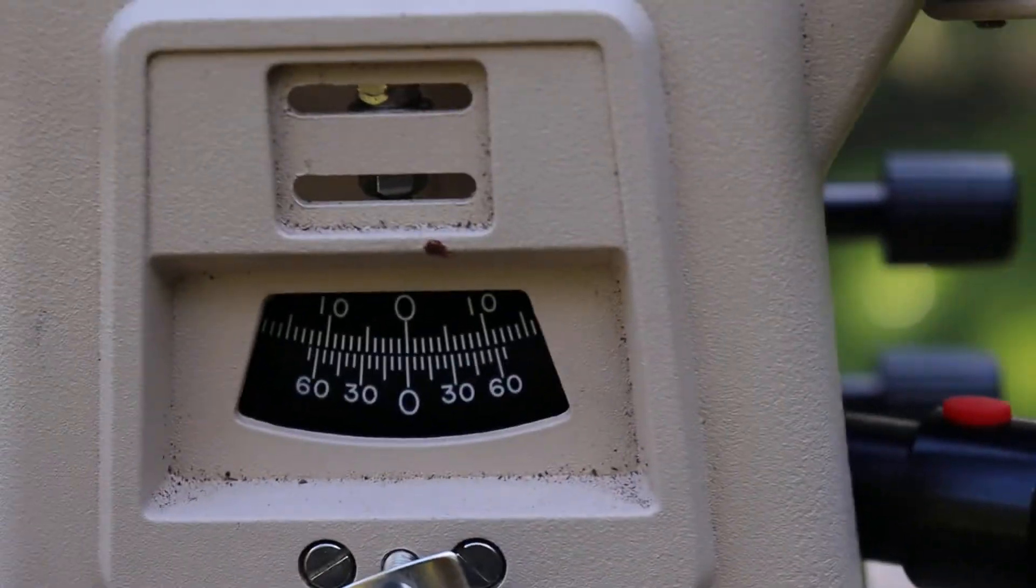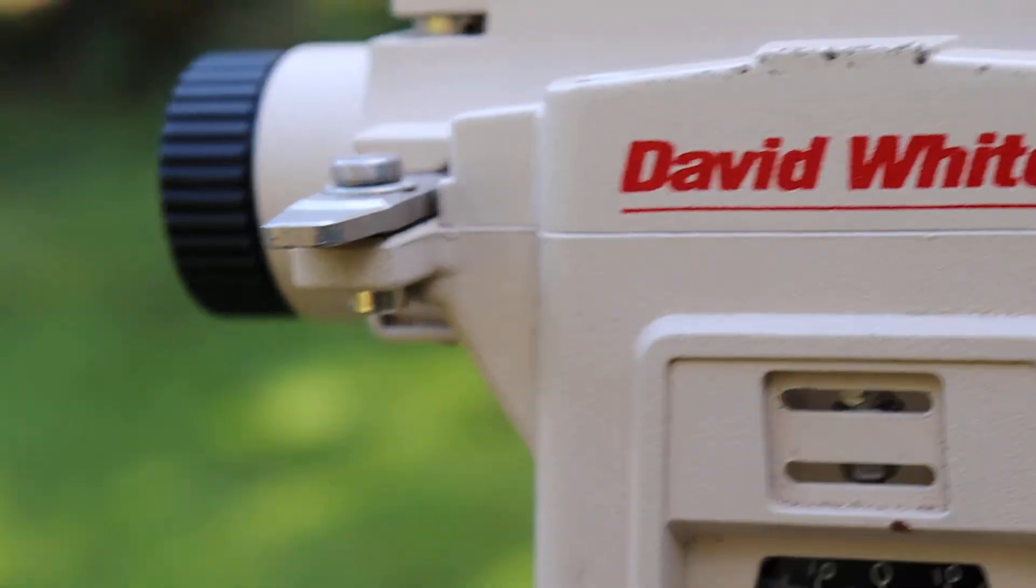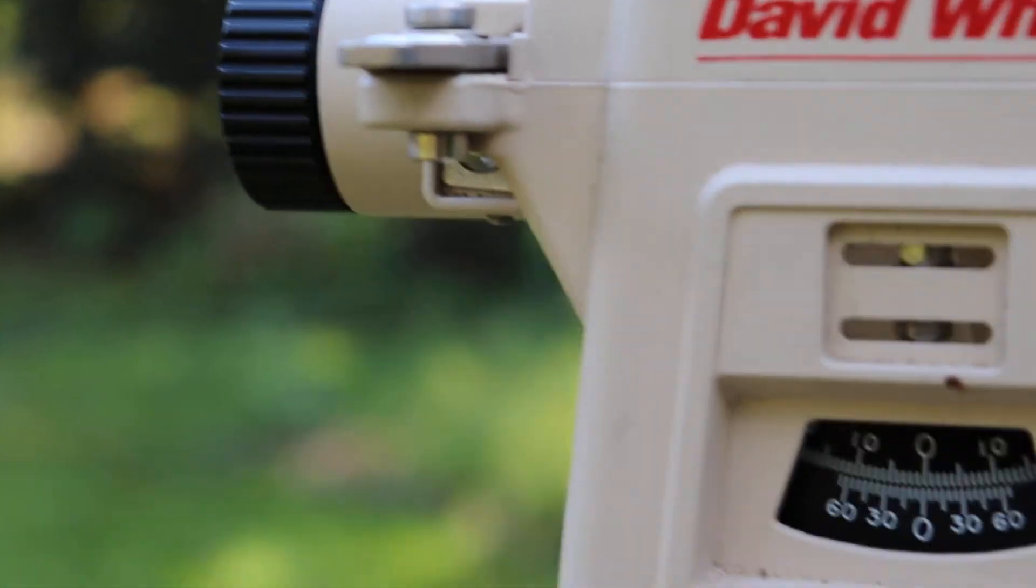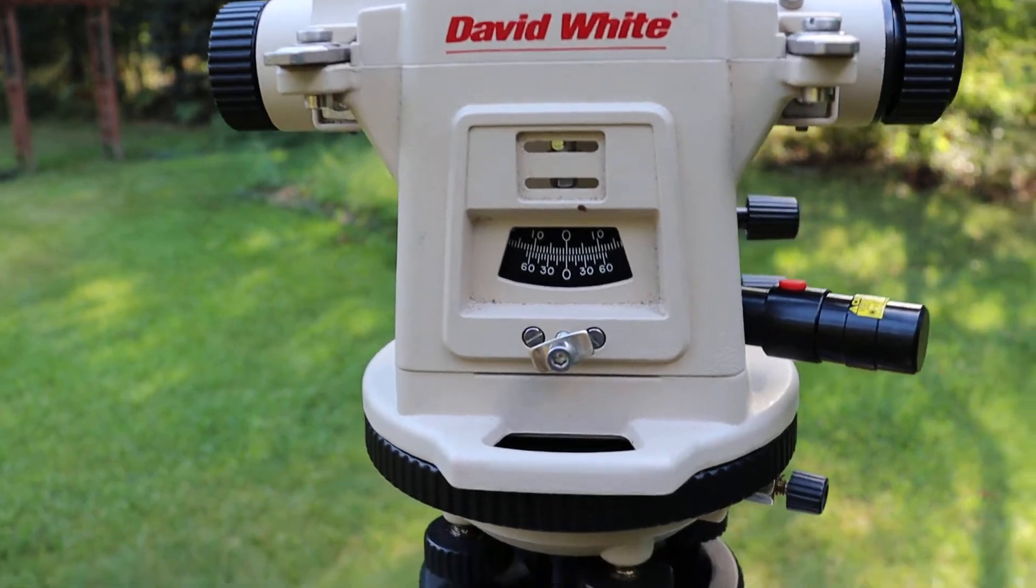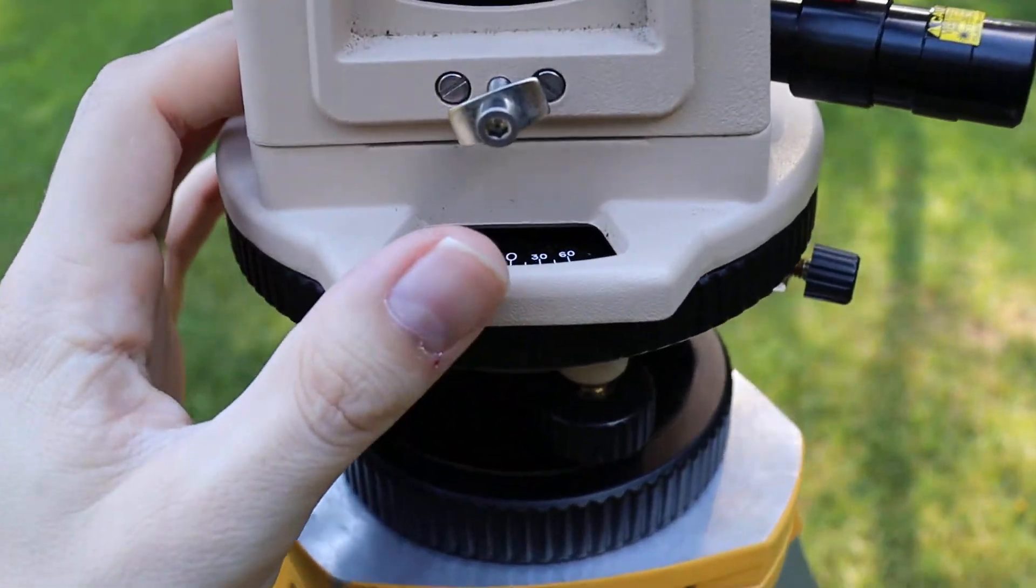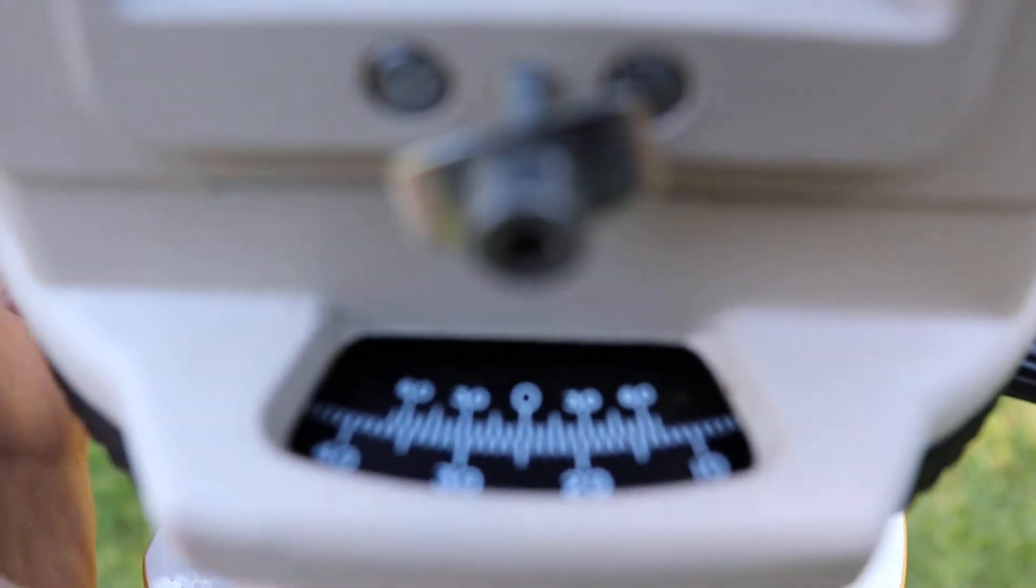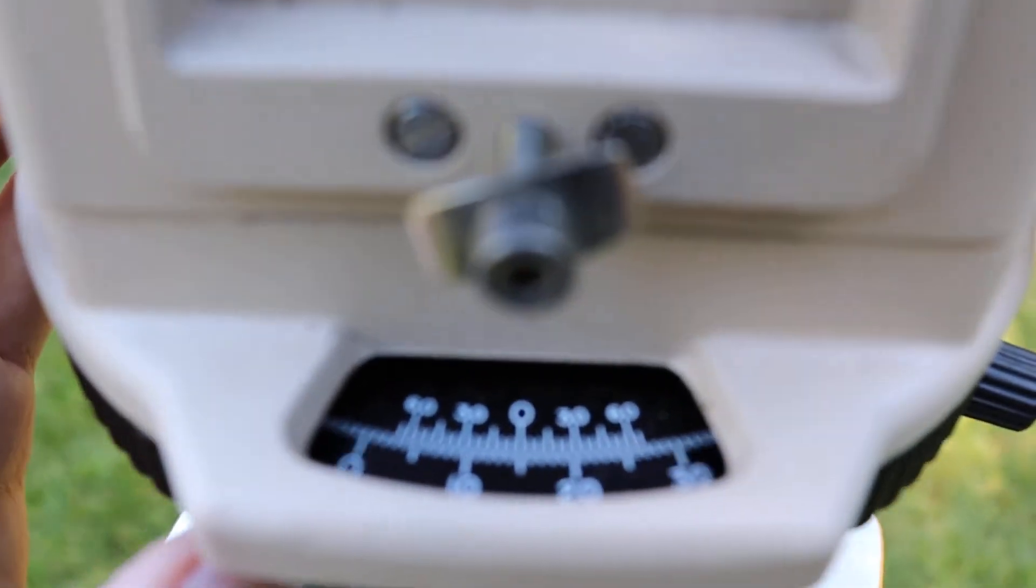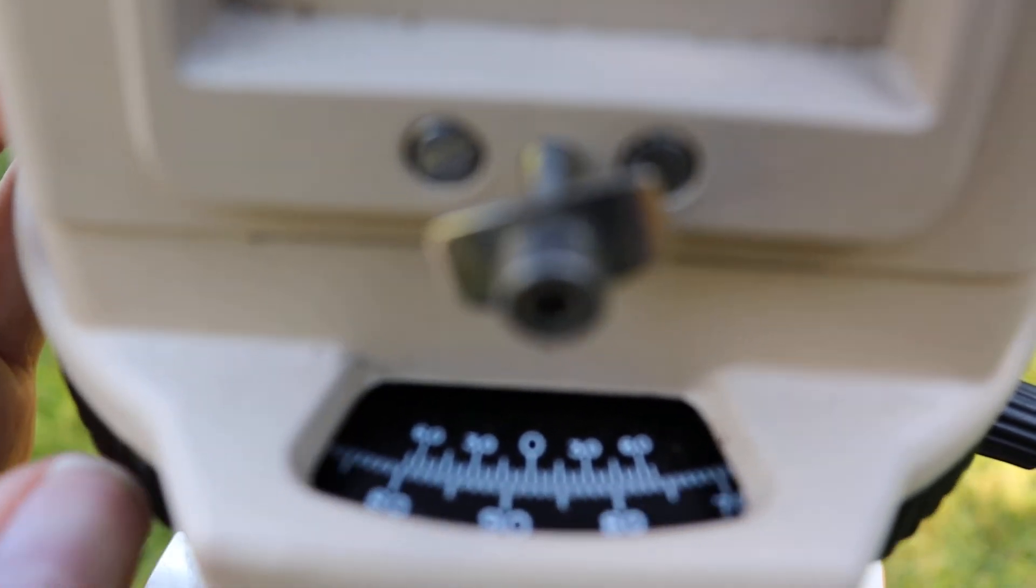What you'll also want to do is make sure that the transit is pointing directly north while using a compass to align it. Once the transit's pointed directly north, you're going to want to make sure that this is lined up to where you see zero and zero.